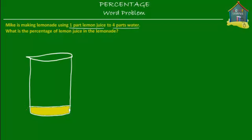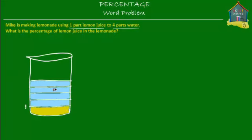If this is one part, then four parts of water would mean the same amount as this yellow part, four times. So one, two, three, and four parts of water. That gives us four parts water and one part lemon juice — a total of five parts. One part out of five is lemon juice, and four parts out of five is water.